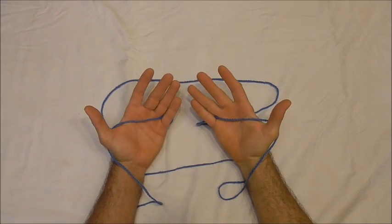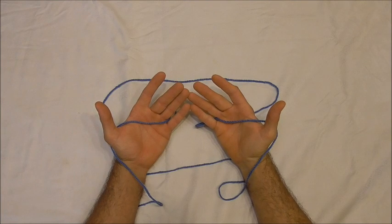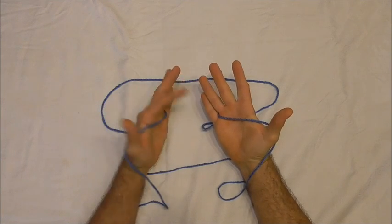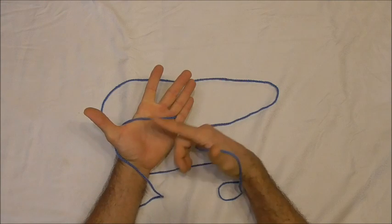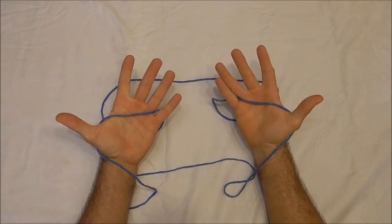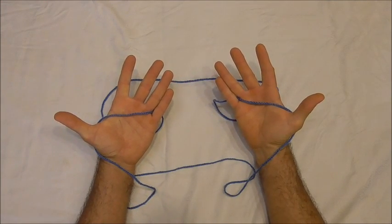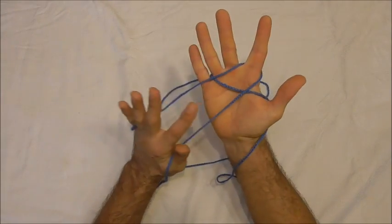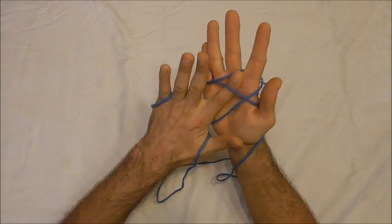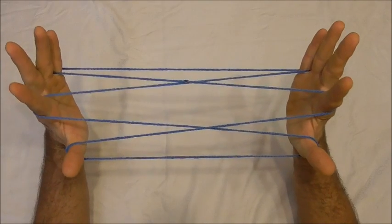So to make this figure I'm using a three-foot loop or around about a meter loop. And I'm starting off by placing that loop between my little finger and thumb. And I'm going to pick up the palm strings with my pointer fingers to do opening A.